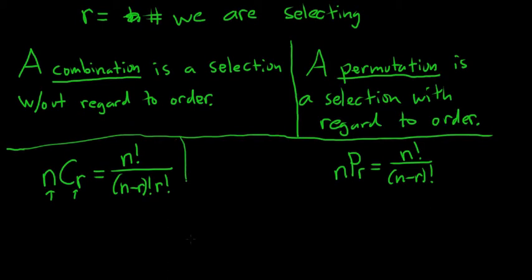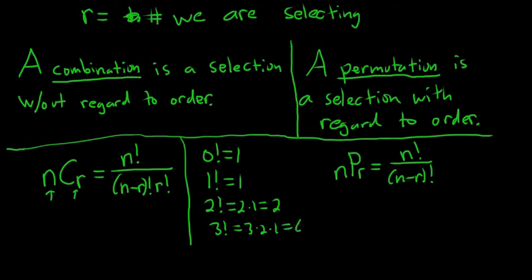So what's a factorial? Quick crash course. Zero factorial is defined to be one. One factorial is one. Two factorial, it's two times one, so it's two. Three factorial is three, two, one, six.